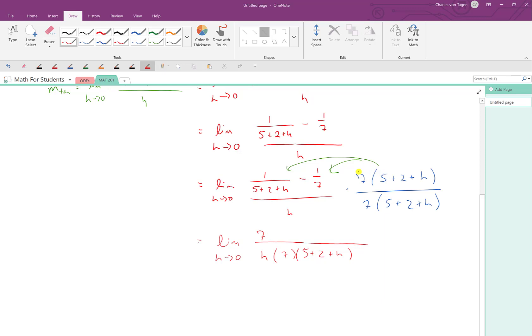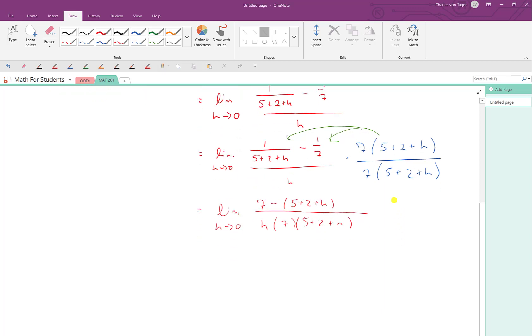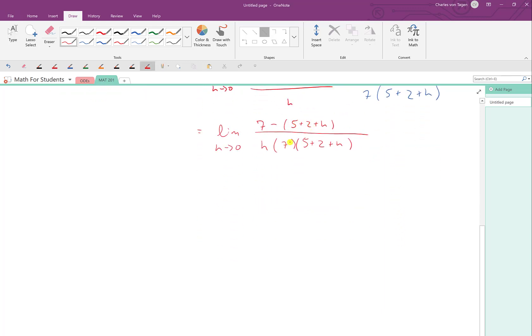Likewise, when I distribute the LCD, this term in blue here, to the second fraction, the factors of 7 cancel, so I'm left with minus parentheses 5 plus 2 plus h. Folks, keep in mind this factor right here, these two terms can't cancel. We can't cancel those two terms.